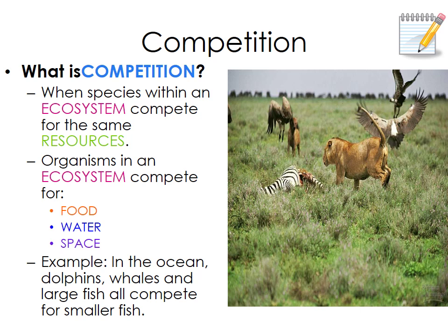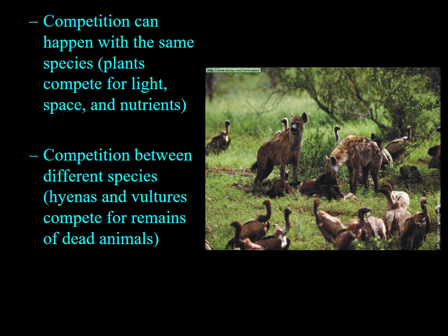Within an ecosystem, organisms compete for food, water, and space. Competition can happen within the same species — for example, trees compete with each other: the taller they grow, the closer they get to light, and shorter trees underneath get less light for photosynthesis. Competition can also be between different species — hyenas and vultures both compete for the remains of dead animals, the same food source.